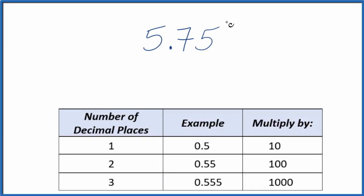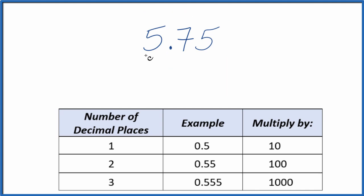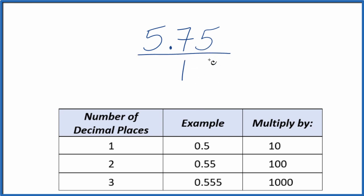If you need to write 5.75 as a fraction, here's how you do it. So let's call this 5.75 over 1. We're just dividing by 1, so it's still 5.75, the same value. But now we have the start of a fraction.